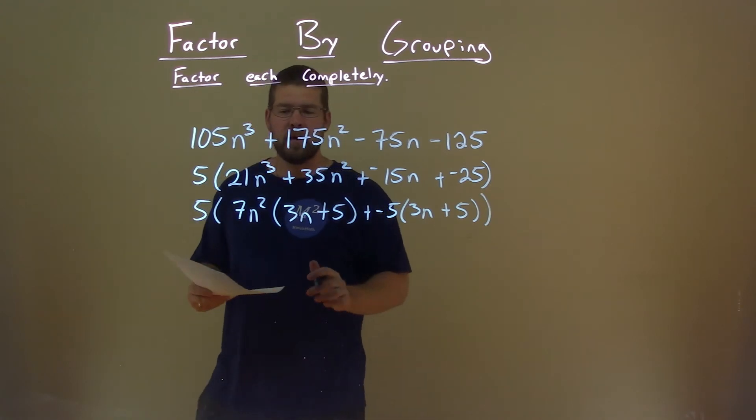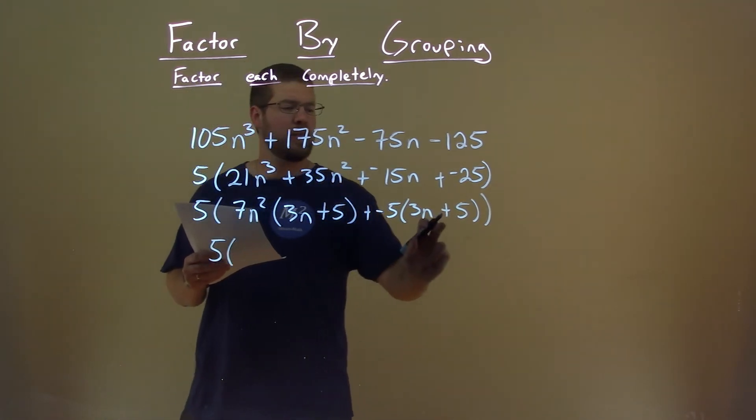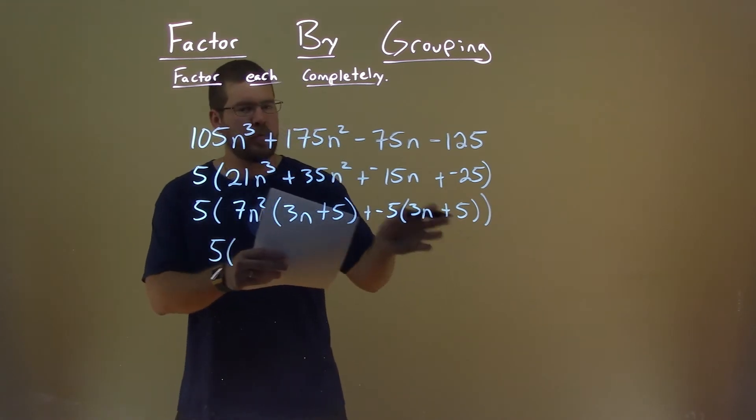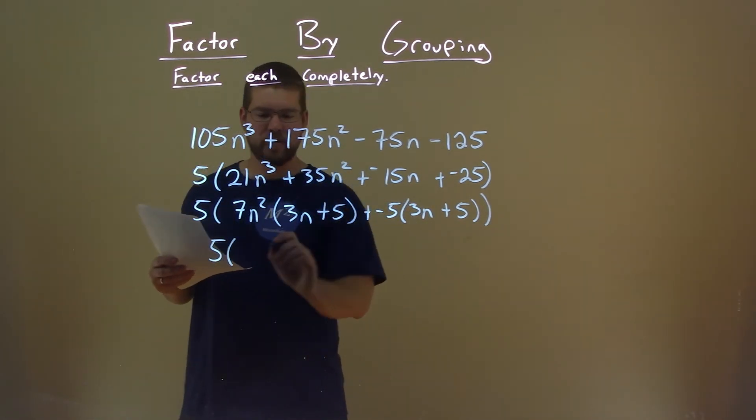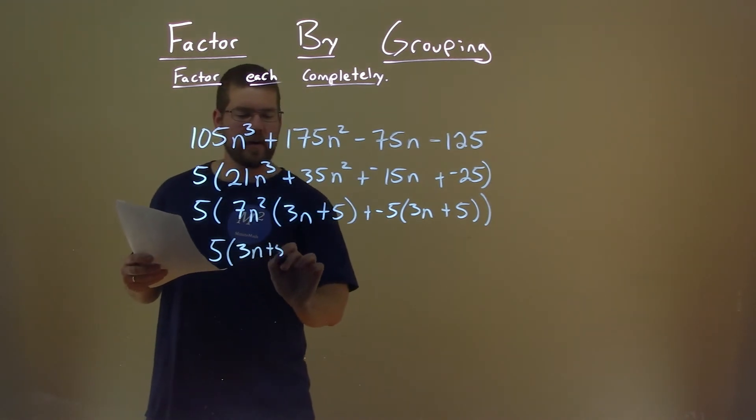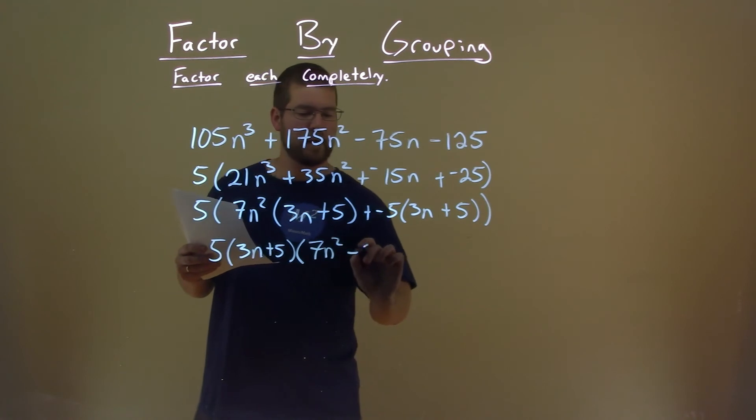We're almost there. 5 still comes down, but notice there's a 3n + 5 and a 3n + 5 right here. If we pull those out of this expression, we're left with 3n + 5 right here, times 7n² - 5.